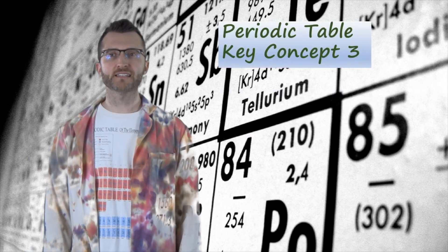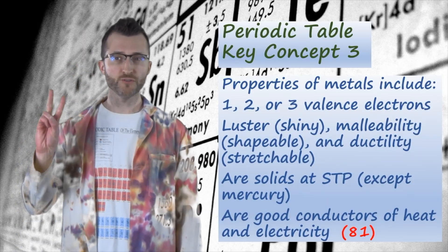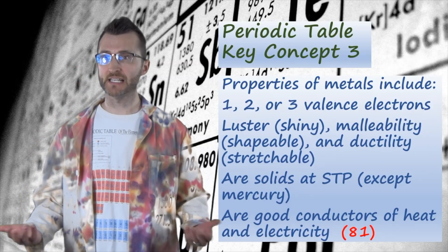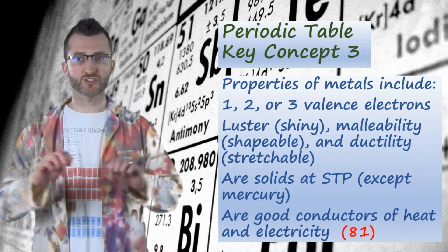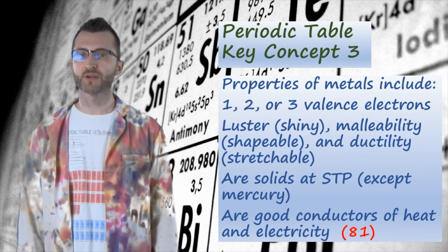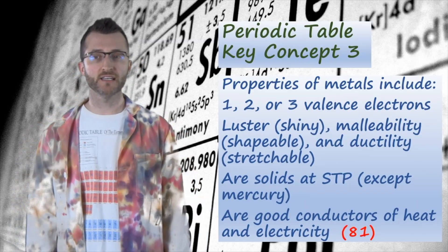Periodic Table Key Concept 3. Properties of metals include one, two, or three valence electrons, luster, which means shiny, malleability, which means shapeable, and ductility, which means stretchable. Metals are also solids at STP, except mercury, which is a liquid. And they are good conductors of heat and electricity.